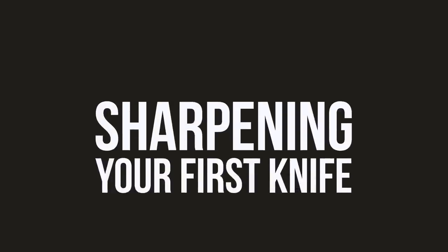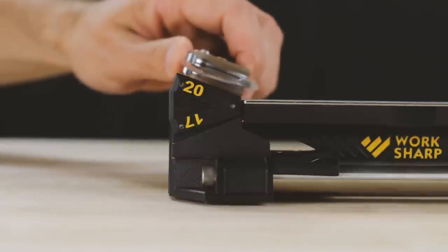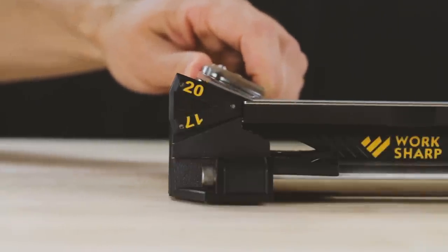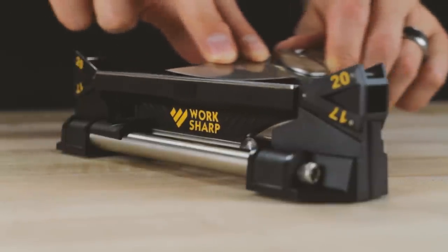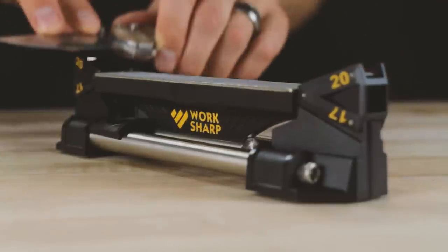Sharpening your first knife. Place your knife onto the sharpening guide. Using light pressure, hold the blade perpendicular to the abrasive and sweep across the coarse diamond plate.